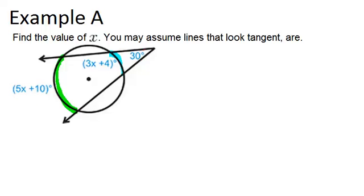We also know that this angle over here is 30 degrees. Notice that we have two secant lines that are intersecting the circle. So the relationship between the two arcs and the angle in this case is the bigger arc, 5x plus 10,